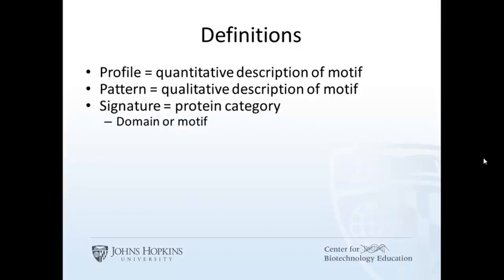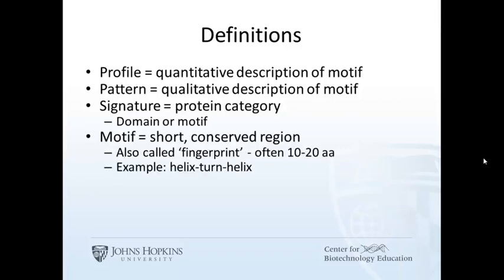A signature is what the profile or pattern is trying to represent. It's a conserved region of a protein. A motif is usually short, often less than 20 amino acids. There can be secondary structure associated, such as helix-turn-helix.